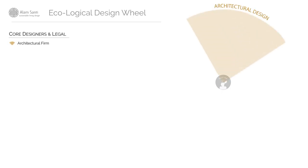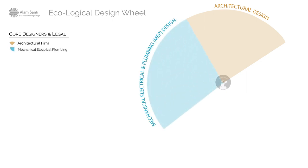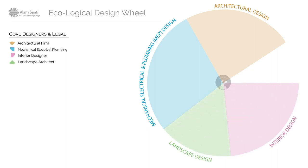A project starts with a seed — a brief from a visionary client to an architectural firm explaining what they want to do. Following that comes a series of other core designers working with that architectural firm, sometimes under its auspice, to build out the core design. These include the mechanical, electrical, and plumbing designers, the interior designers, and the landscape designers — the broad areas of design involved in a project.